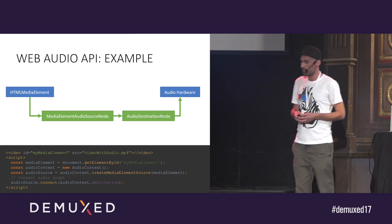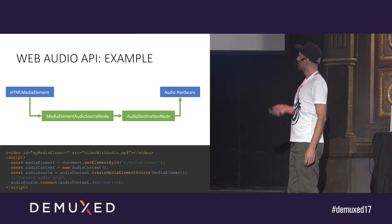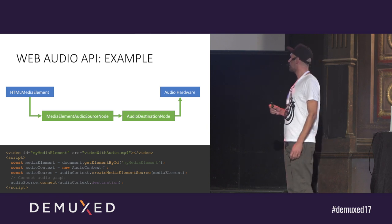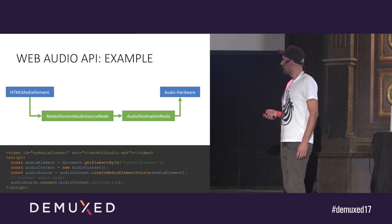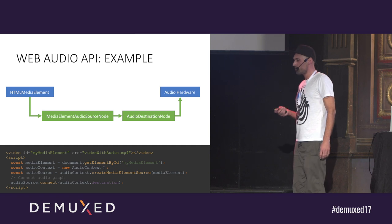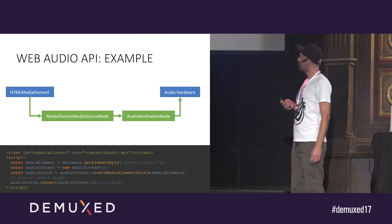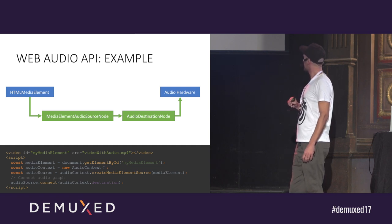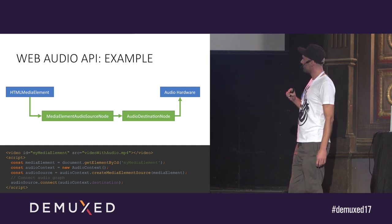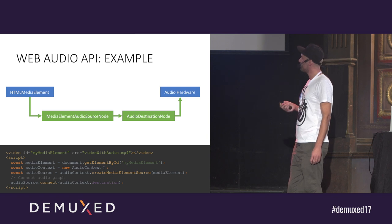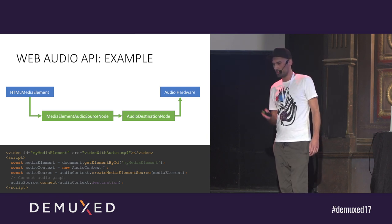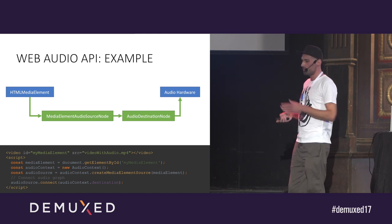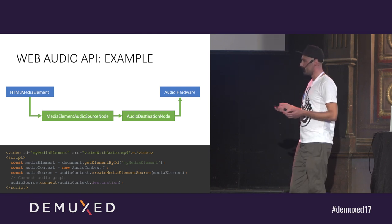A simple example looks like this. In the HTML markup, it's simply a video element with a video and an audio stream. Then in JavaScript, we get a reference to the video element, create a new audio context, and from the context create a source element — which extracts the audio from the video element. Then we connect source to destination, and when we play back the video, the audio flows through this audio context.